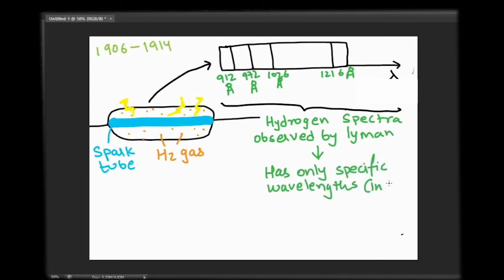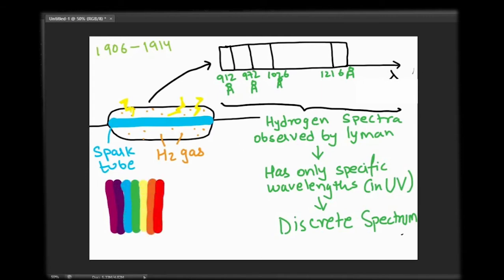There are only specific and unique wavelengths present in its spectrum. Here the wavelengths of spectral lines are mentioned in angstrom, which is equal to 10 to the power of minus 10 meters.